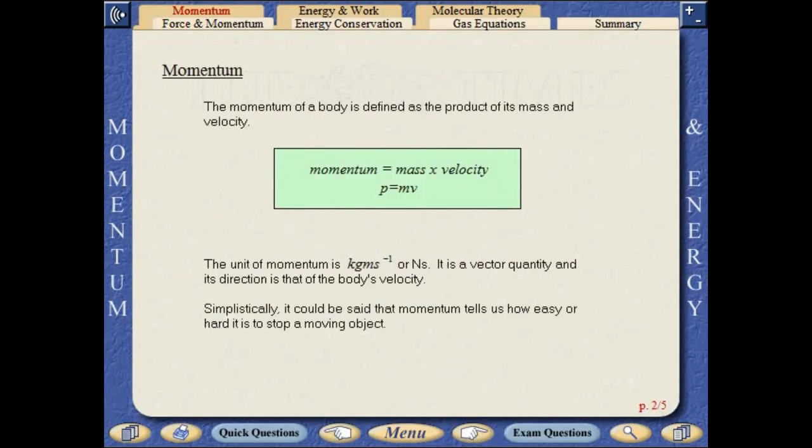The momentum of a body is defined as the product of its mass and velocity. The unit of momentum is kilogram meters per second or newton seconds. It is a vector quantity and its direction is that of the body's velocity. Simplistically, it could be said that momentum tells us how easy or hard it is to stop a moving object.